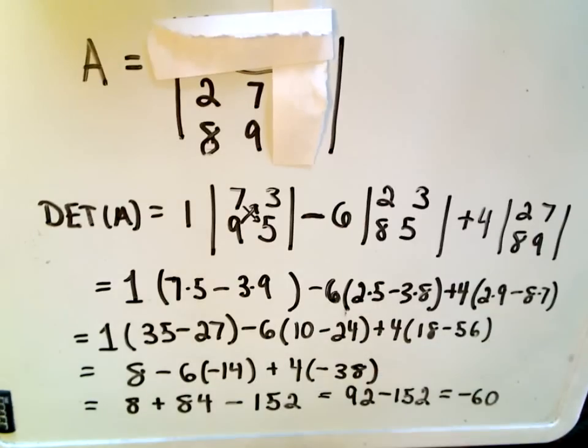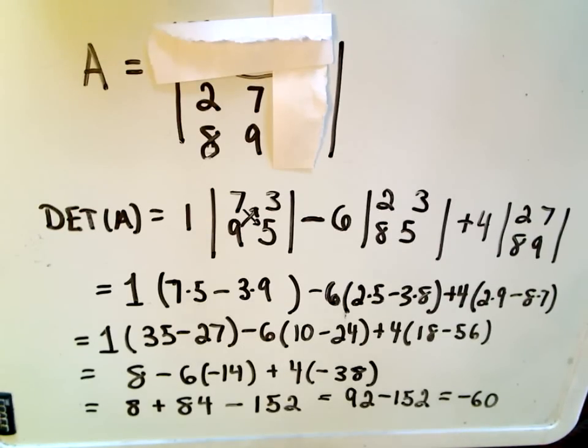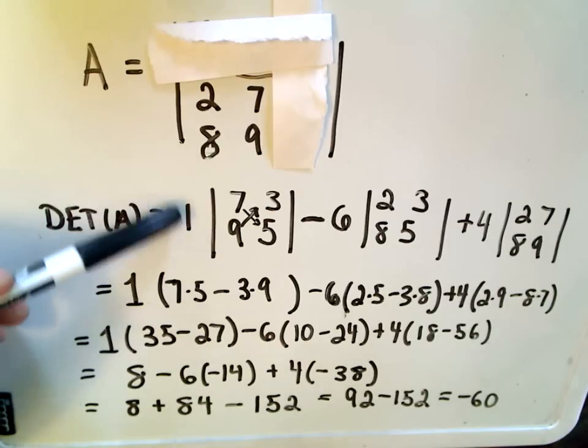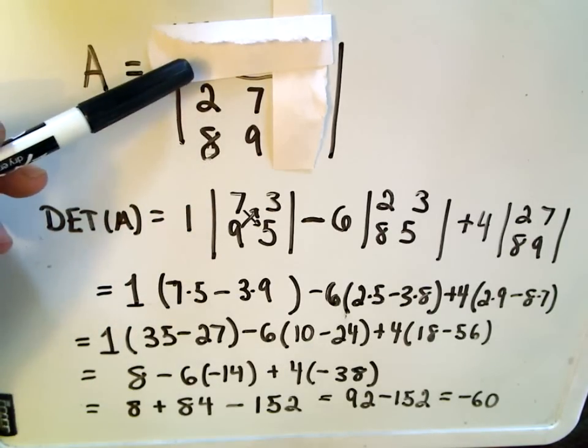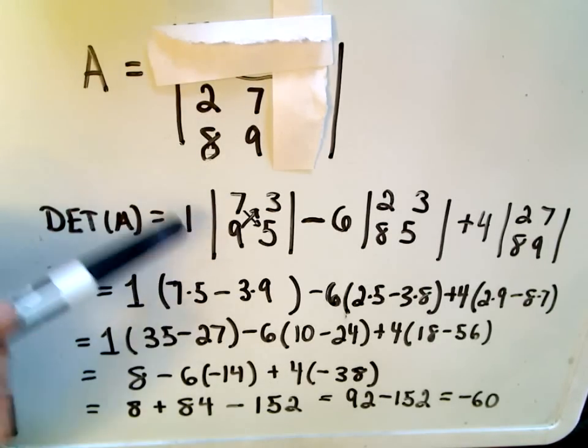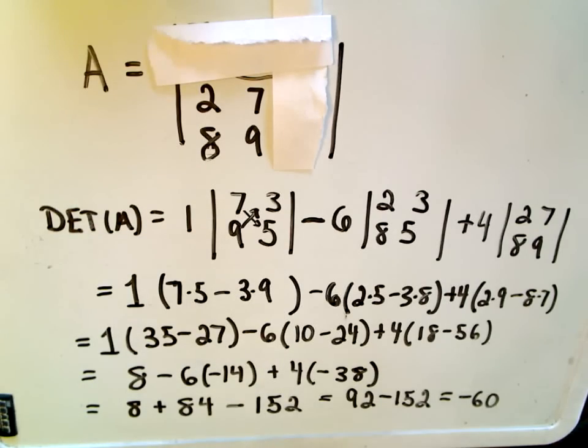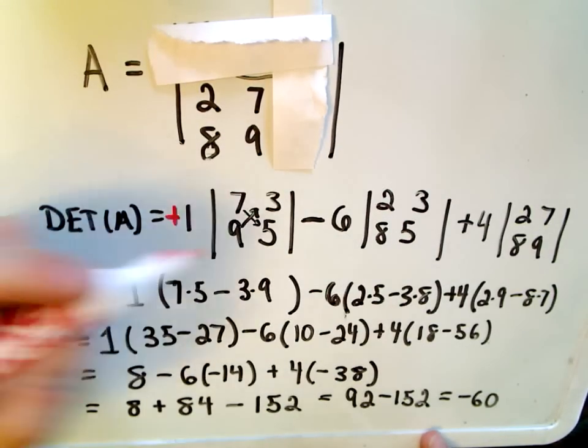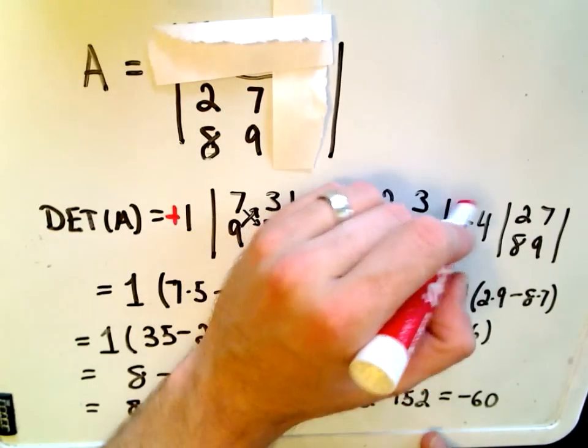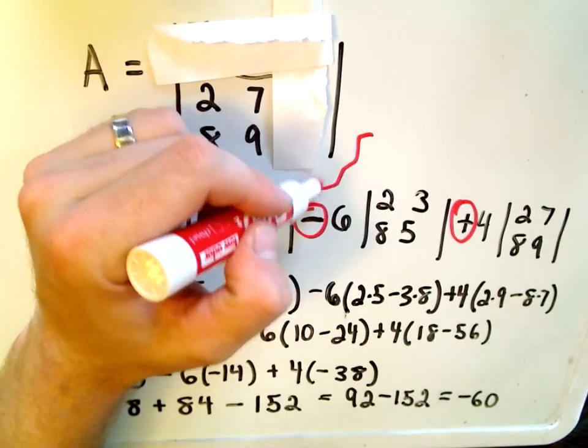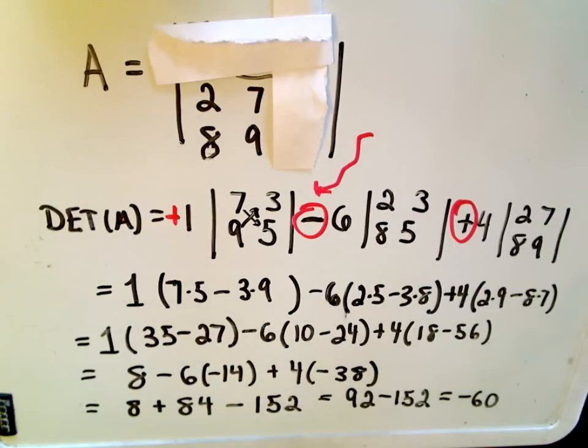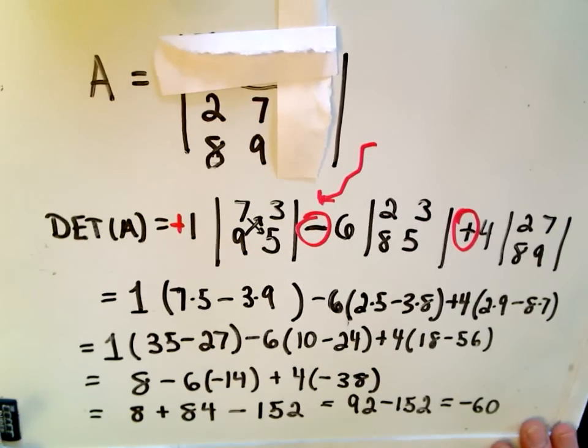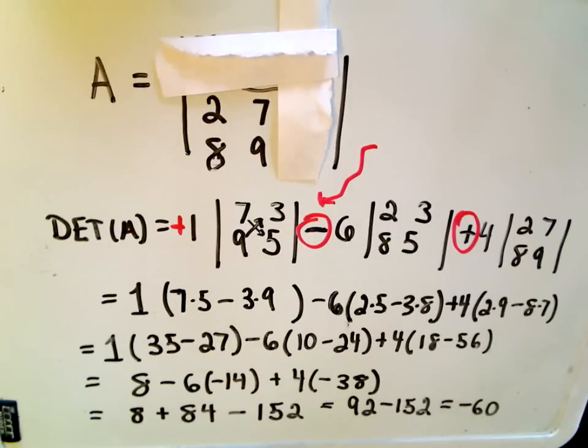The determinant is negative 60, assuming all my arithmetic is correct. The main thing is just knowing the setup: take the first row and break it down to smaller determinants. Make sure you notice the signs are positive, negative, then positive - it's easy to leave out that minus sign and things don't work out. I hope this video makes sense and helps out. Feel free to post comments and questions.